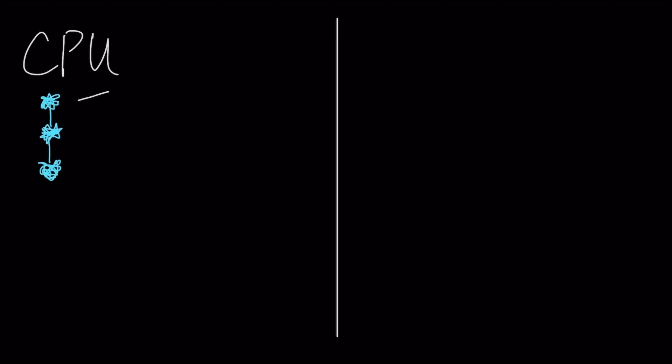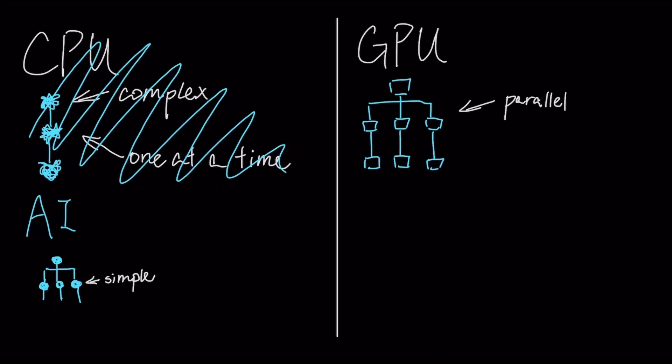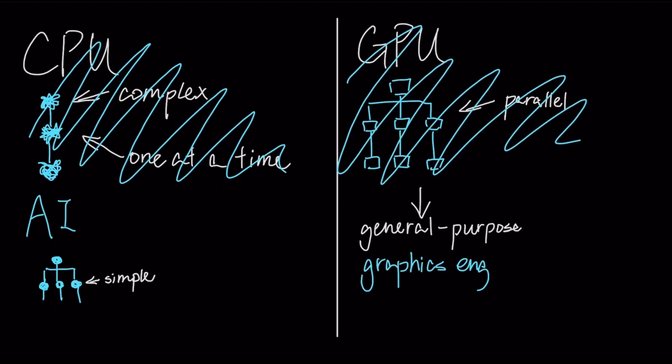A CPU is built for complex, one-at-a-time tasks, making it extraordinarily inefficient for the simple, repetitive arithmetic of AI. A GPU is a significant improvement due to its parallel nature, but it still carries the overhead of being a general-purpose graphics engine.